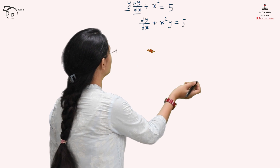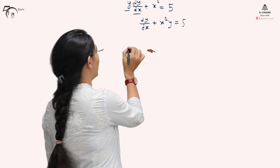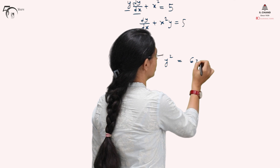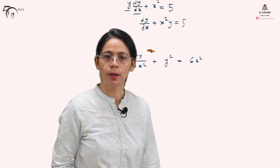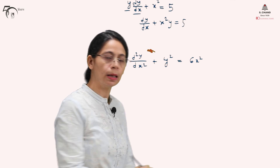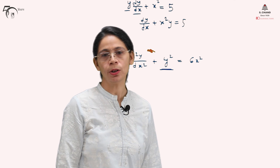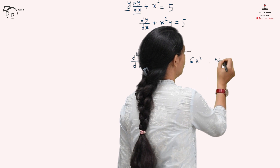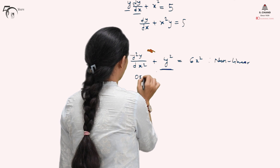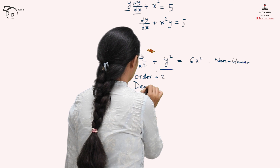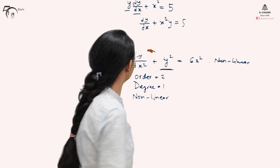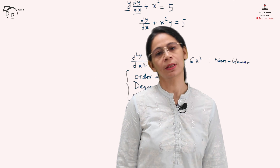We can take another example to show non-linearity. Suppose we have d²y/dx² + y² = 6x². Here, the dependent variable is not multiplied with its derivative, but it is multiplied with itself — that is, y times y. So this differential equation is also a non-linear differential equation. For this equation: order is 2, degree is 1, and it is a non-linear differential equation.